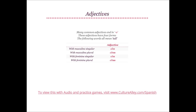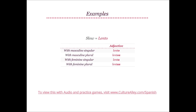Many common adjectives end in O and have four forms. The following words all mean tall: with masculine singular, the adjective is alto; with masculine plural, it will be altos; with feminine singular, it is alta; with feminine plural, it becomes altas. Slow translates to lento: masculine singular is lento, masculine plural is lentos, feminine singular is lenta, and feminine plural is lentas.